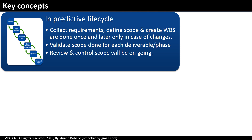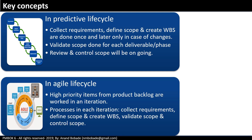Scoping is different in agile projects. Initially, a product vision is developed, and the product backlog — a list of high-level product requirements — is developed based on that vision. High-priority items from the product backlog are then added to an iteration, sometimes called a sprint. In each iteration, the processes include: collect requirements, define scope and create WBS, validate scope, and control scope. Remember, as per PMI, scope management processes are followed in both approaches; however, how they are applied is different.